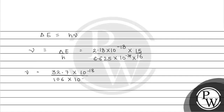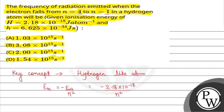Dividing by H, which is 6.625 into 10 to the power minus 34, this will be approximately 0.308 into 10 to the power minus 16, or we can say frequency will be equal to 3.08 into 10 to the power 15 second inverse. So the correct option is B. Hope you understood the question. Best of luck!